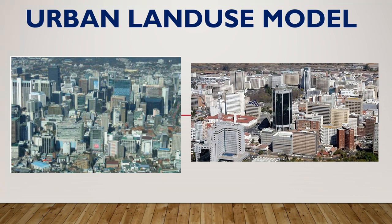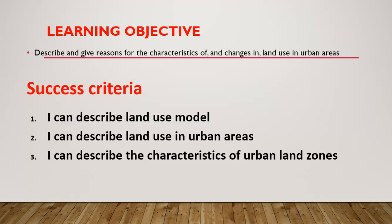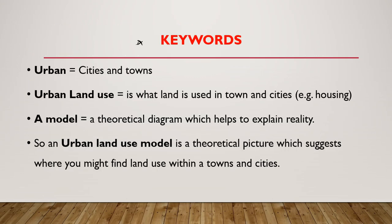Let's now look at lesson three on the same series on settlement. Here we'll look at urban land use models. What we need to do is describe and give reasons for the characteristics of and changes in land use in urban areas.